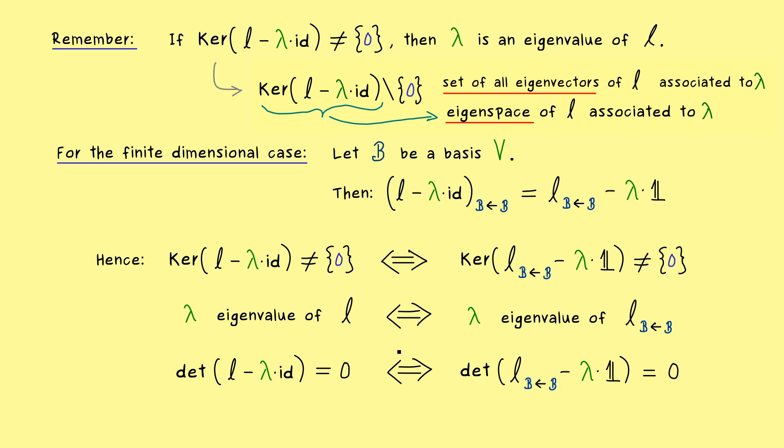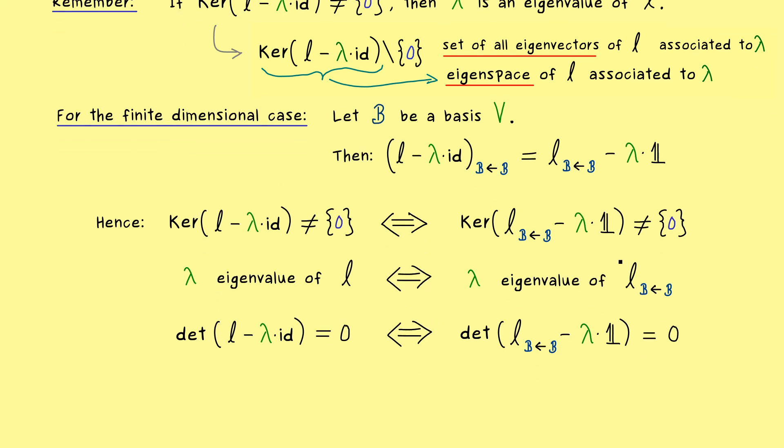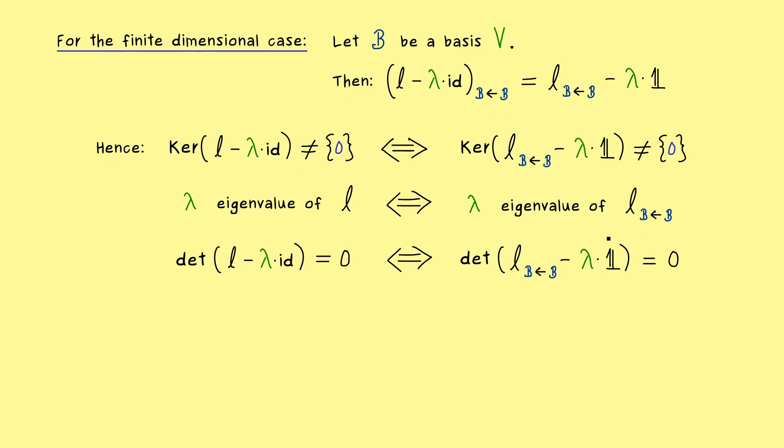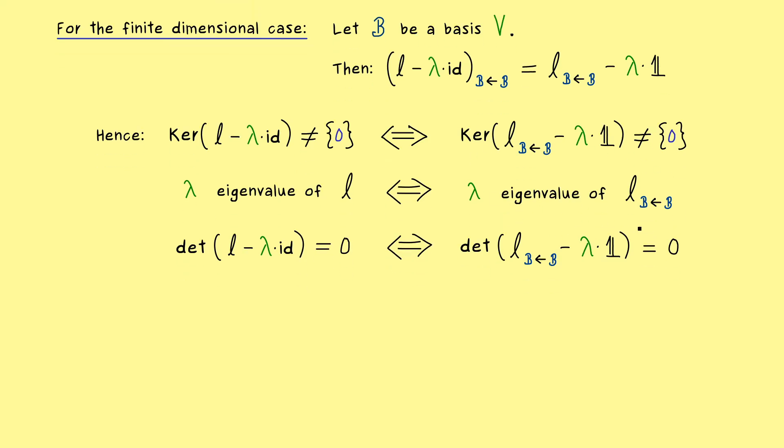However you also see that for the common finite dimensional case you just have to know how to calculate eigenvalues for square matrices. Because then you can translate everything to the abstract case as well. For this reason the actual motivation for this abstract case comes from the infinite dimensional case. Therefore I would say let's look at a quite simple example of that.